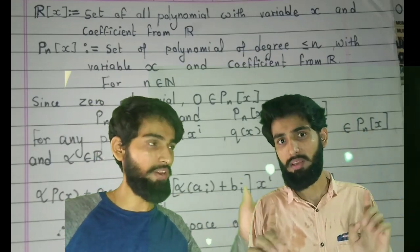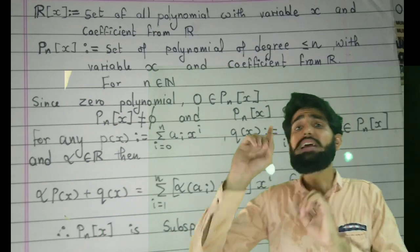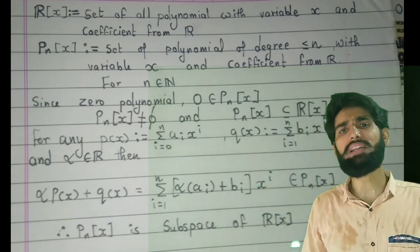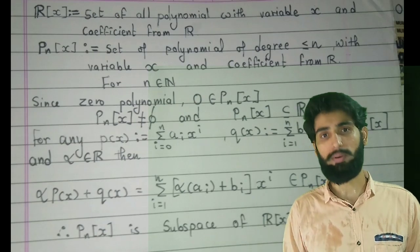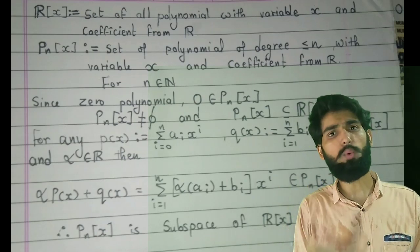If something is a subspace, then 0 must be an element. Hence in this case you can define P_n[x] as set of all polynomials of degree less than or equal to n. That less than or equal to n is really important.